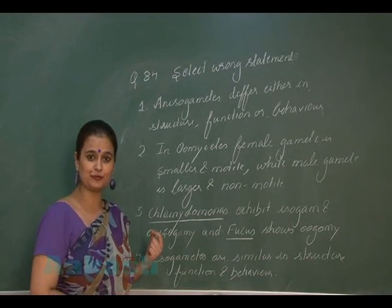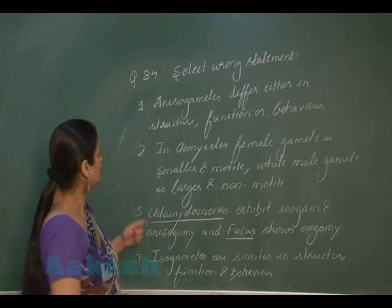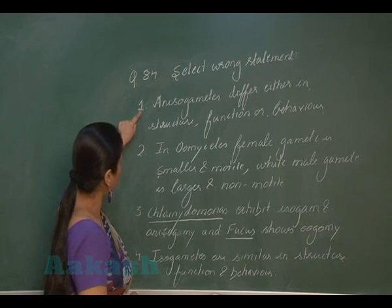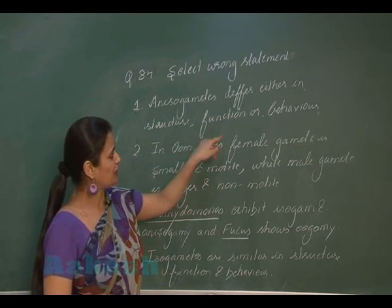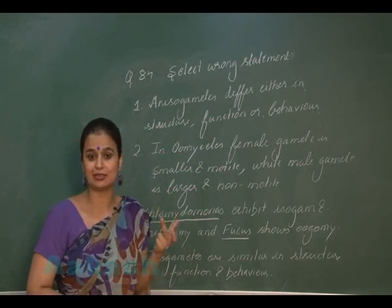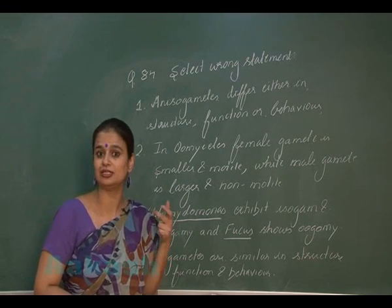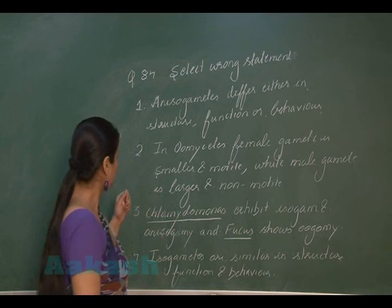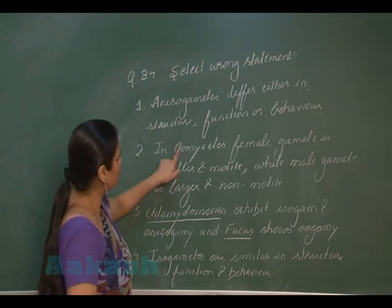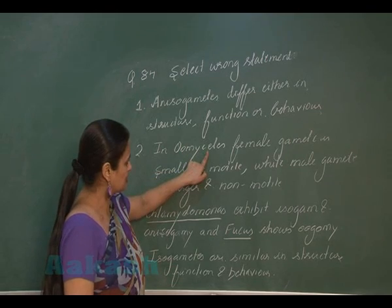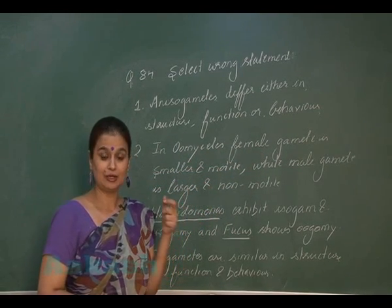In question number 84, we have to select the incorrect statement. Looking at the first statement: isogametes differ in their structure, function, or behavior. Isogametes are morphologically and structurally different types of gametes. Now coming to the second option: in oomycetes, the female gamete is smaller and motile.